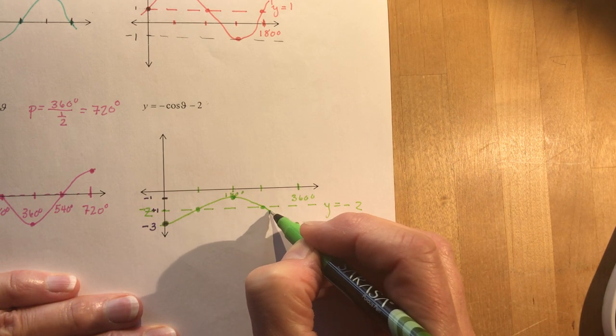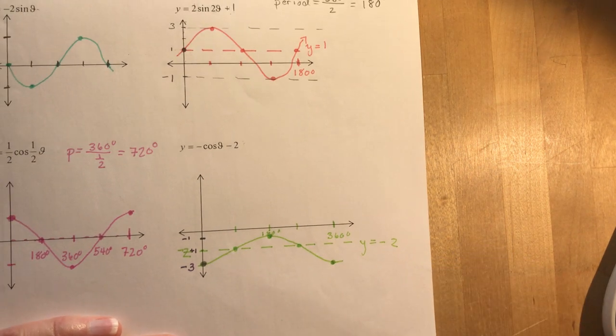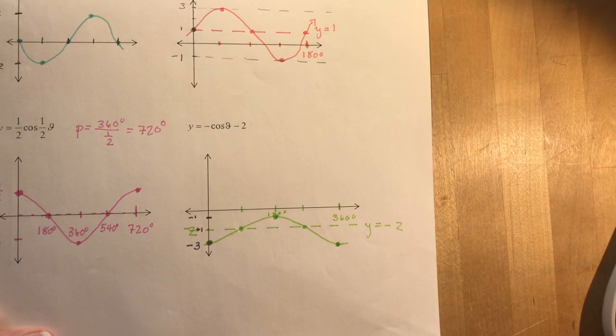I'm going to have my highest point in the middle here at 180, and that's going to be at minus one. The other two are going to be my zeros, or the marks right on the axis. And I go like this. Sometimes they're pretty flat, right? There you go. There's minus cos theta minus two.